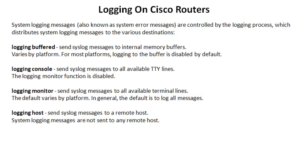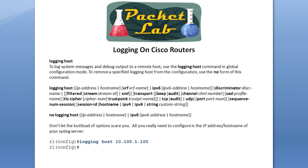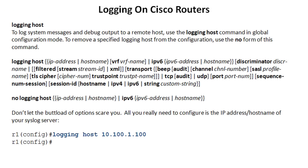Most features you need to configure in Cisco routers don't all start with the same keyword. Logging host is going to be the command you configure to send your Syslog messages to a Syslog server — a Syslog daemon, Syslog receiver, whatever term we use going forward. You can see there are a ton of options there, but don't let that scare you, because all you really need to do is enter the IP address, or if you're using DNS, you might be able to use a hostname of your Syslog server. So logging host and then the IP address — that's all you need. All the rest of that stuff is optional, and a lot of it will vary based on platform and IOS version.